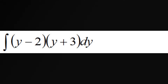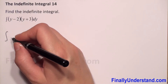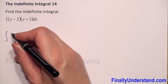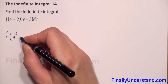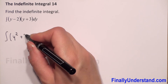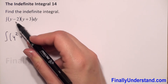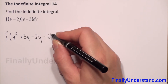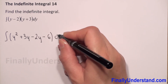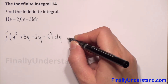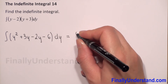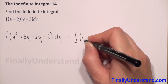First we will eliminate parentheses. We have the indefinite integral, and we have to do multiplication: y times y is y squared, y times 3 is 3y. Now we have negative 2y minus 6. We have the integral with respect to y. We can rewrite this — we have 3y minus 2y.